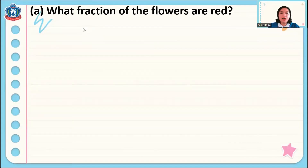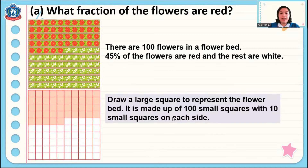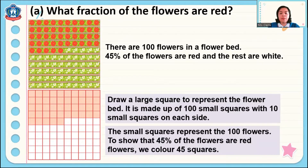I have here a problem. What fraction of the flowers are red? There are 100 flowers in a flower bed; 45 of the flowers are red and the rest are white. I have here a large square to represent the flower bed, made up of 100 small squares with 10 small squares on each side — a 10 by 10 grid. The small squares represent the 100 flowers. To show that 45 of the flowers are red, we color 45 squares. So 100 minus 45 equals 65, meaning 65 are white flowers.